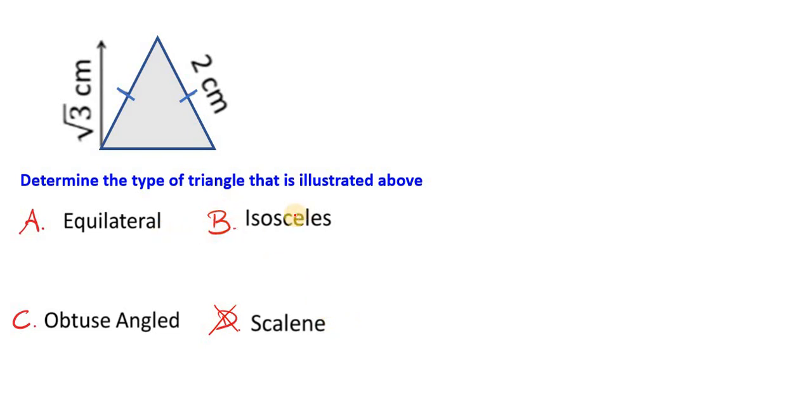Now isosceles means we have two sides being the same specifically. Equilateral means all three sides are of the same length. Equilateral: equal lengths for all sides.